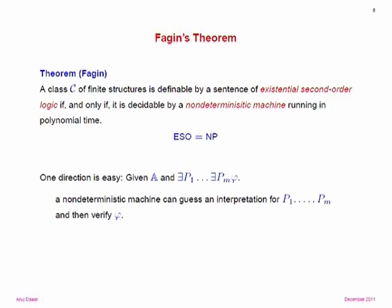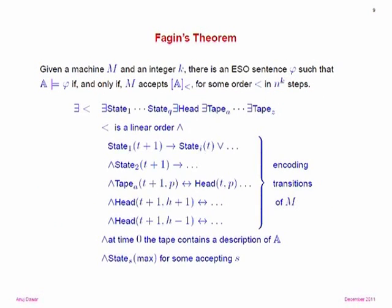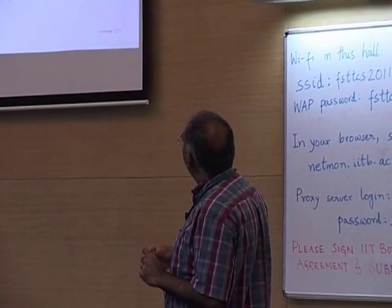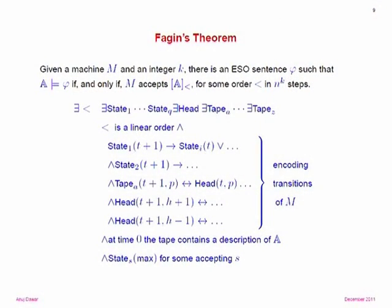Roughly, in one direction, if you start with an existential second-order sentence, a non-deterministic machine can simply guess an interpretation for each of the relation symbols — write out the string non-deterministically representing these relation interpretations for symbols P1 to PM — and then verify whether the formula phi is true. Because for any fixed formula phi, verification is polynomial time, the whole thing is non-deterministic polynomial time.